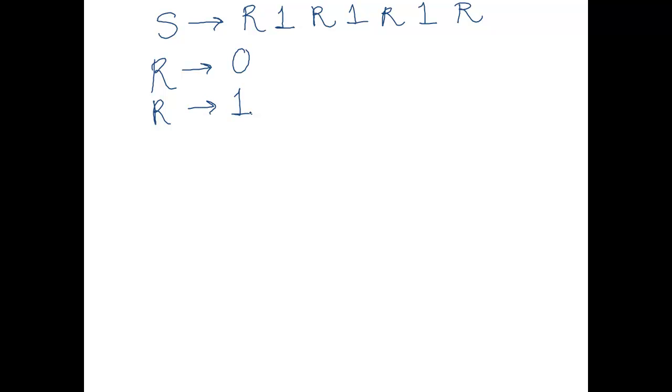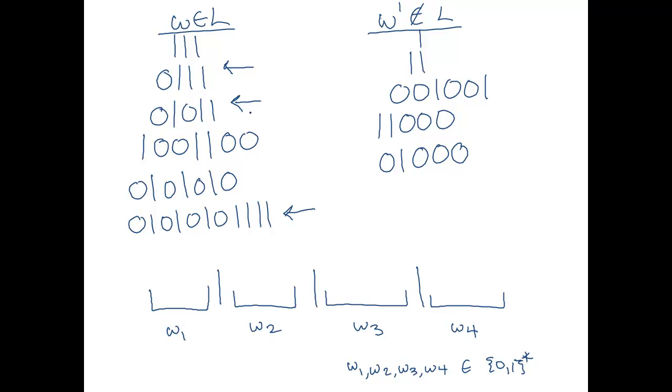So, r could be just a single 0. That's one thing r could be. Right now, with our grammar, that would generate only the string 0, 1, 0, 1, 0, 1, 0. Okay, but that string is in the language, so that's an okay rule. r could also generate a 1. Okay, so now with these two rules, I could have a bunch of different kinds of strings. I could have, say, 0, 1, 0, 1, 0, 1, 1, or flip any of those 0s to 1s. But that's not very exciting. Right now, that's only giving us strings of length, what, 2, 4, 7.